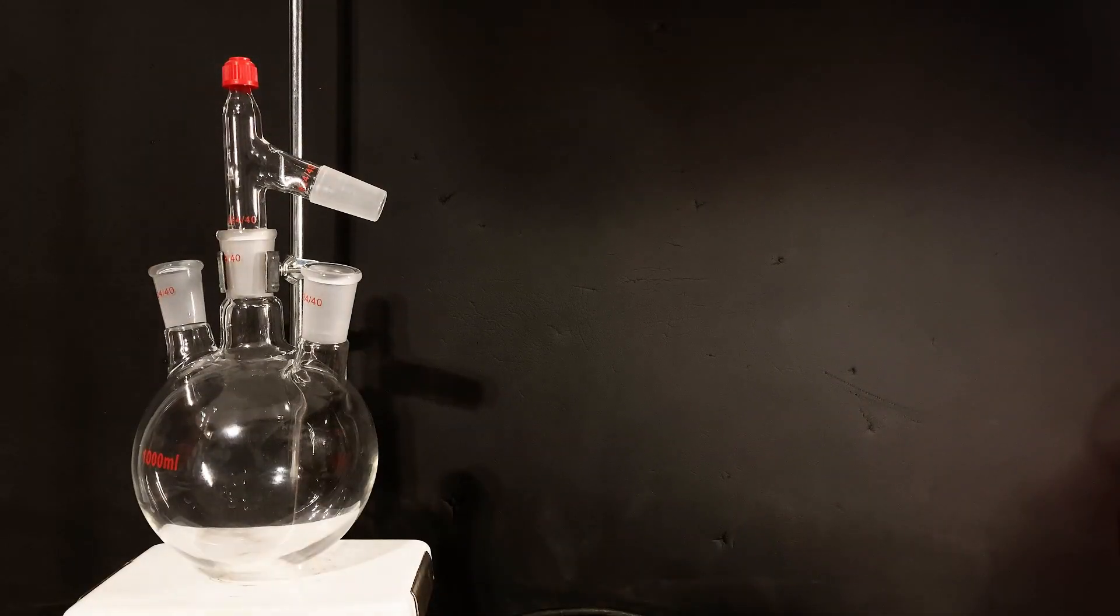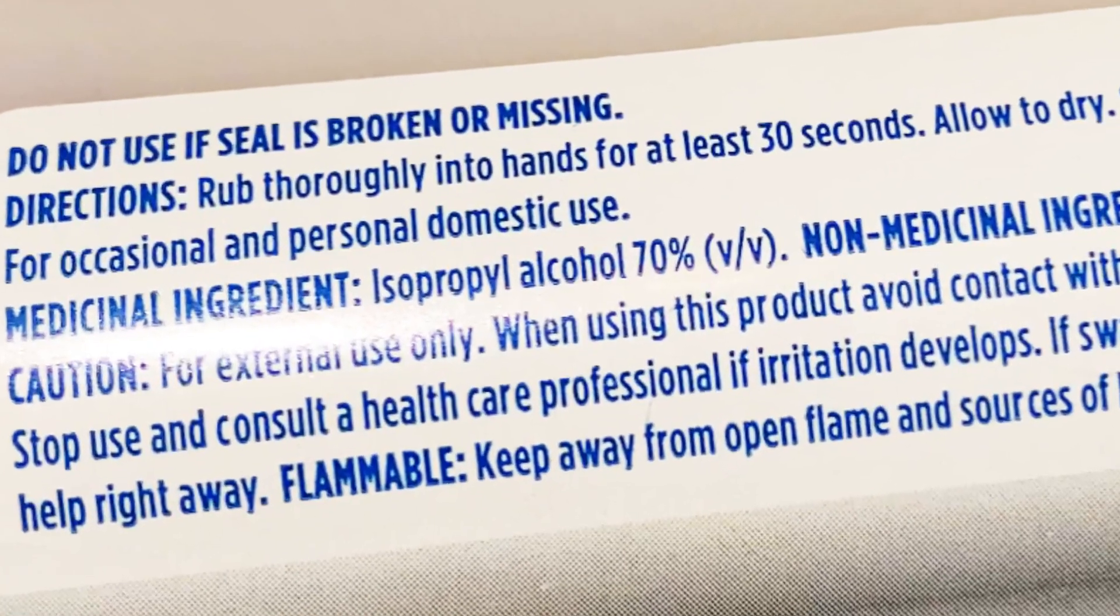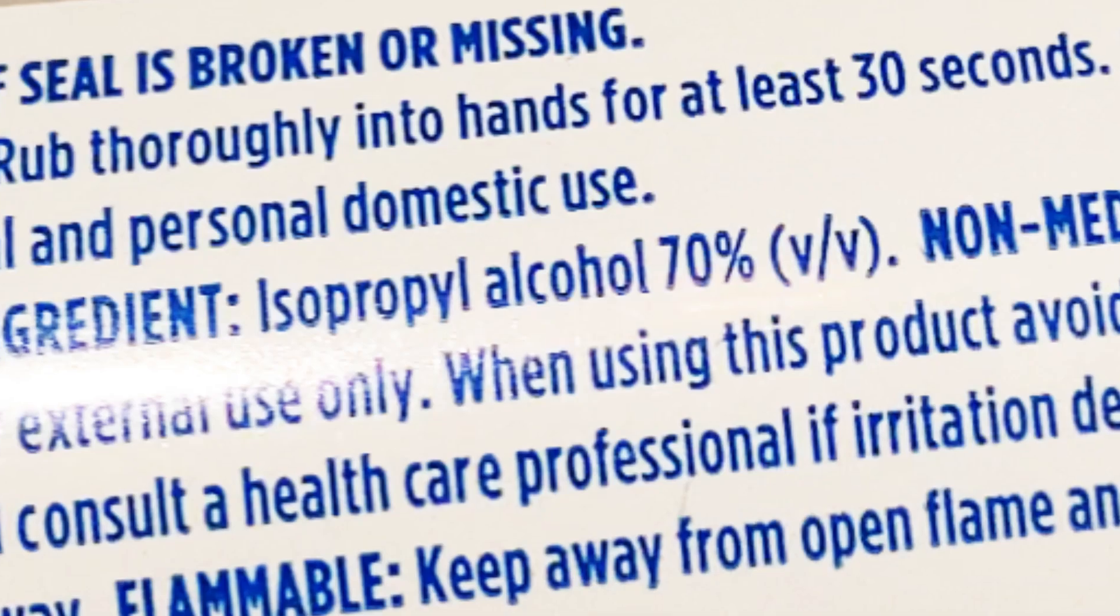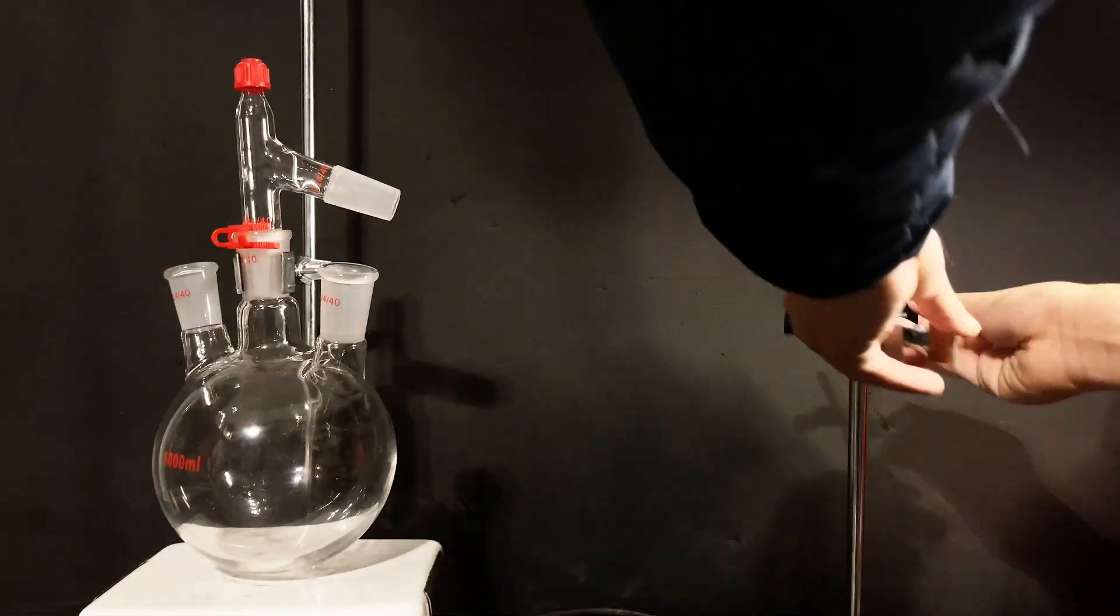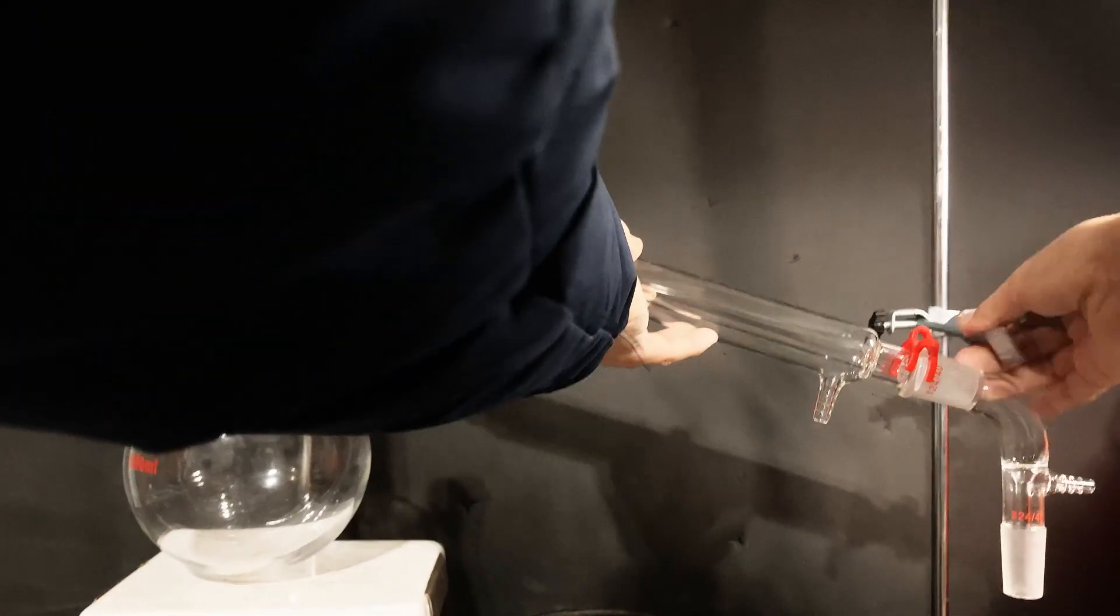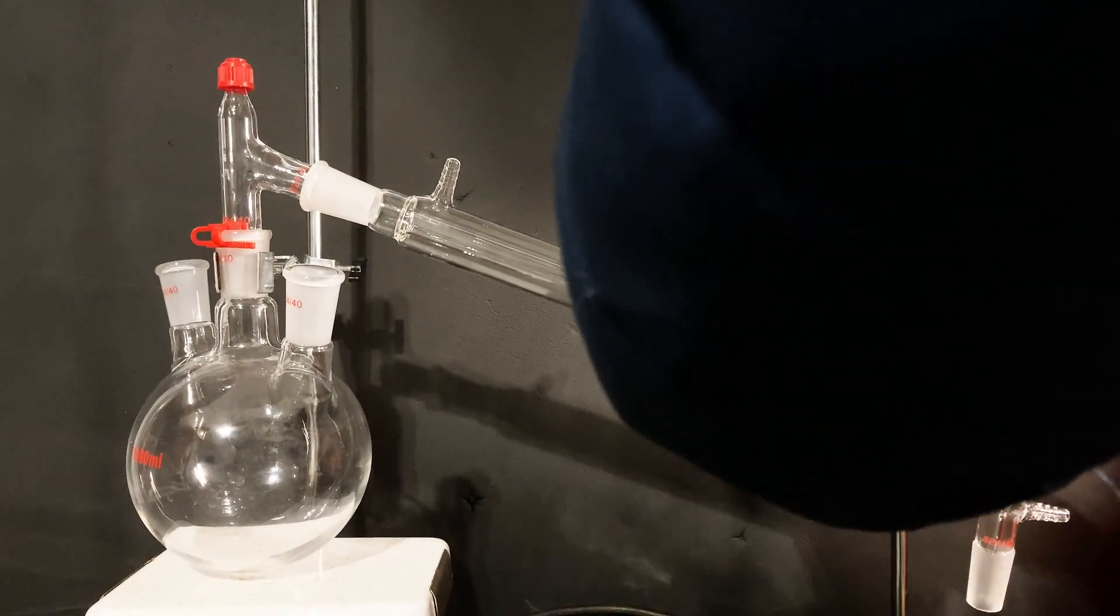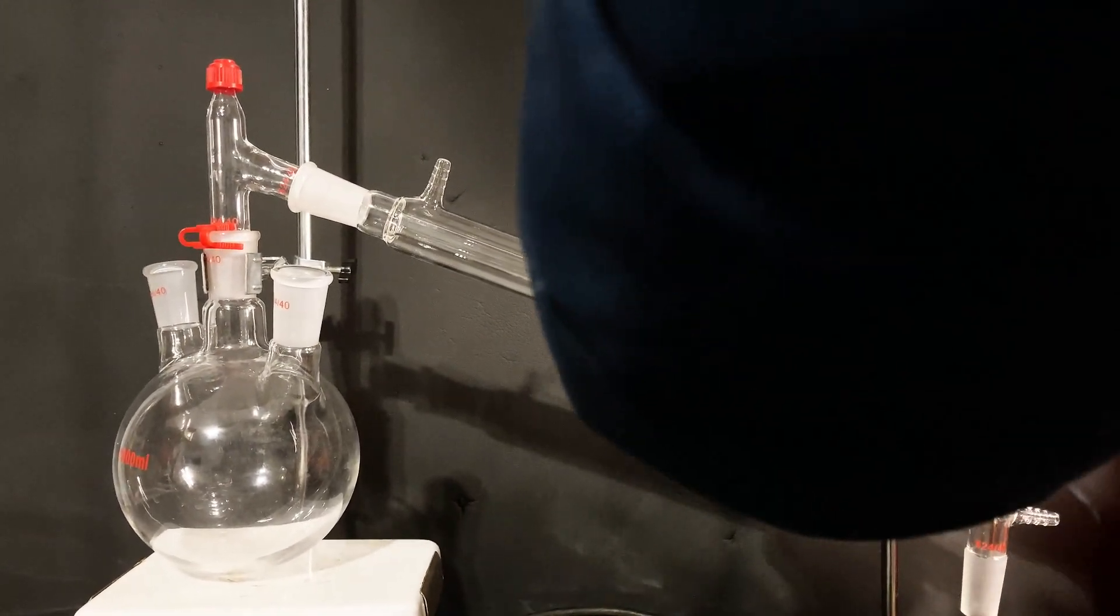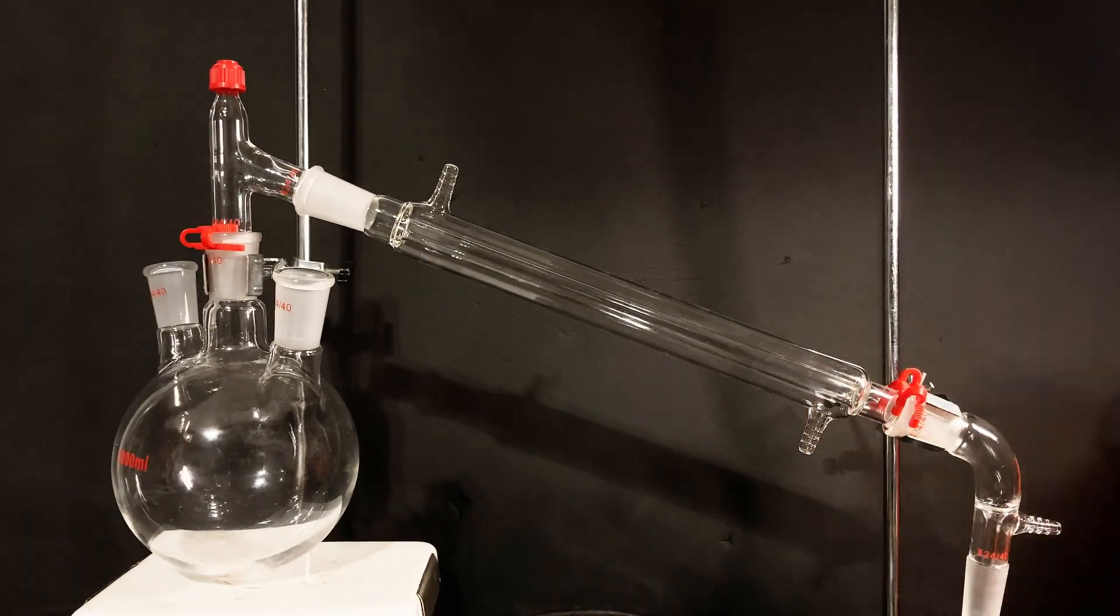When we heat up the mixture, only the water and isopropanol will be affected as the hydrogen peroxide and glycerin have way higher boiling points. Now here it says that it's only 70% isopropyl alcohol by volume, but we can only distill it to a maximum of 88% by mass rather than the full 100%. This is because water and isopropanol form an azeotrope of 88% isopropanol at around 80 degrees celsius, and we'll have to use other techniques to achieve the fully anhydrous form.